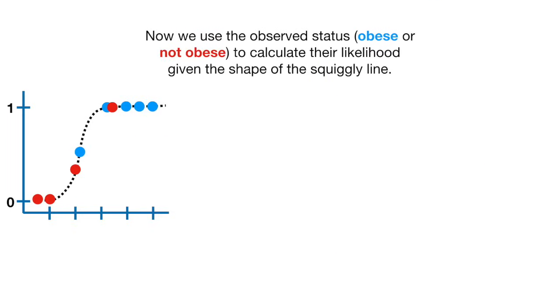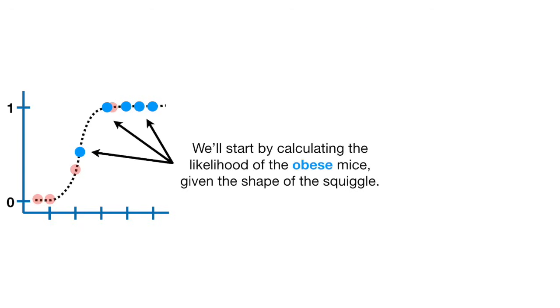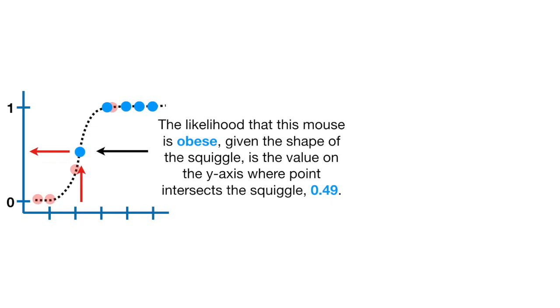Now we use the observed status, obese or not obese, to calculate their likelihood given the shape of the squiggly line. We'll start by calculating the likelihood of the obese mice given the shape of the squiggle. The likelihood that this mouse is obese, given the shape of the squiggle, is the value on the y-axis where the point intersects the squiggle, 0.49.